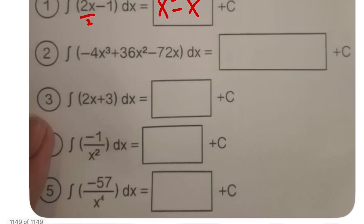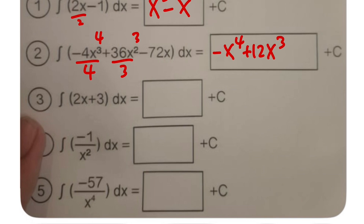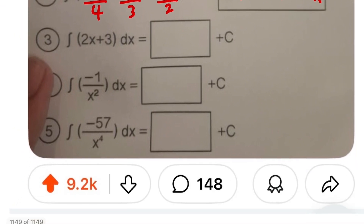Next one — pay attention to the power. We get 4 divided by the new power, giving negative x to the fourth power. Next term: raise to the power and divide by it, giving 12x to the third. Lastly, x to the first — divide 2 by the power — giving minus 36x squared. The plus C is taken care of.